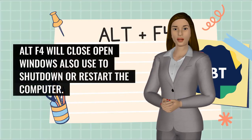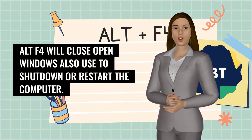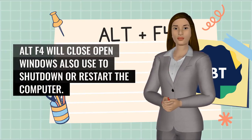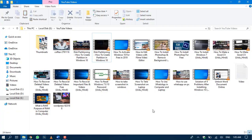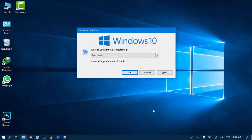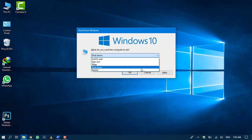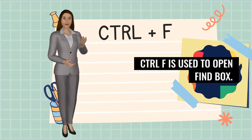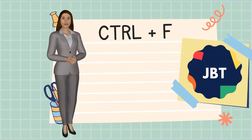Number 10 is Alt F4. This will close open windows, and is also used to shut down or restart the computer. Number 11 is Ctrl F. Ctrl F is used to open the find box.